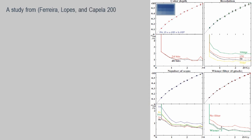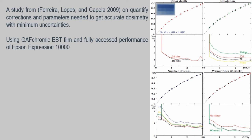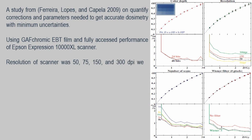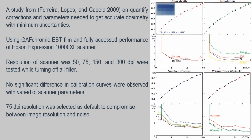A study from Ferreira, Lopez, and Capelle in 2009 was done to quantify corrections and parameters needed to get accurate dosimetry with minimum uncertainties. It was done using GAFChromic EBT film and fully assessed the performance of the Epson Expression 10000 XL scanner. Resolutions of 50, 75, 150 and 300 dpi were tested while turning off all filters. There was no significant difference in calibration curves with varied standard parameters. It was concluded that 75 dpi resolution was selected as default to compromise between image resolution and noise.